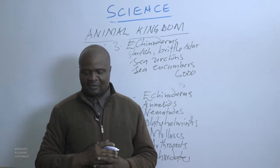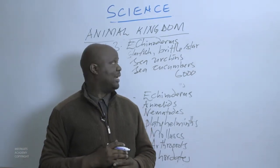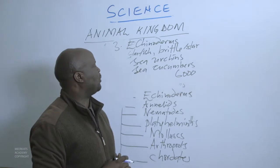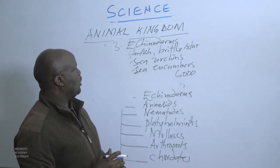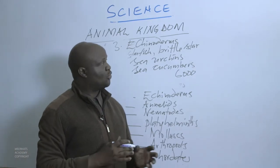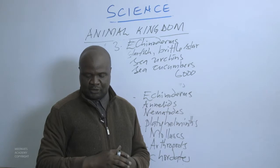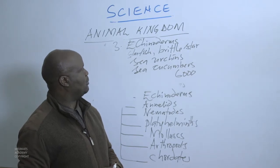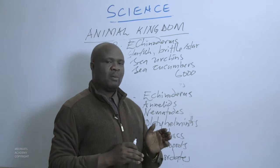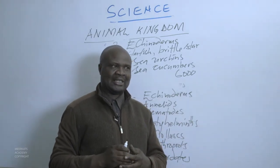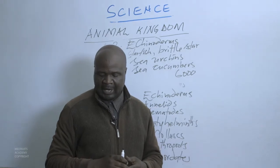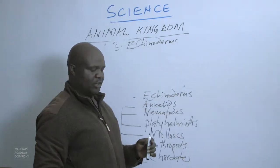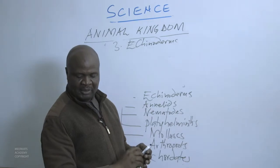All Echinoderms have a chalky layer under their skin which forms a protective cover or protective armor. Now we want to talk about symmetry in organisms, so that when we talk of radial symmetry or bilateral symmetry, we can understand the implications.